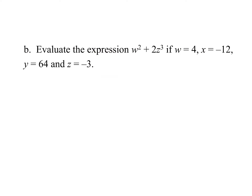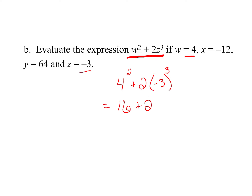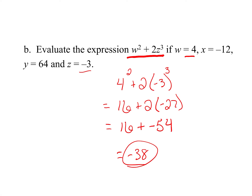Last problem: evaluate W squared plus 2Z cubed, with W as 4, X as negative 12, Y as 64, and Z as negative 3. Plug in: 4 squared plus 2 times negative 3 cubed. 4 squared is 16. Negative 3 cubed — negative 3 times negative 3 times negative 3 — is negative 27. So 16 plus 2 times negative 27 is negative 54. Then 16 plus negative 54 gives negative 38 as our answer.